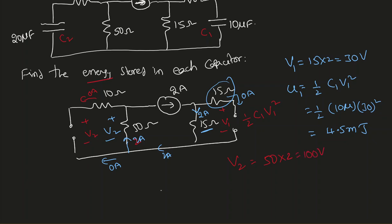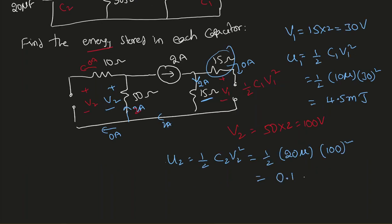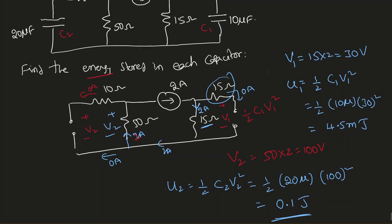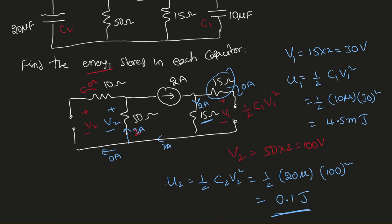The energy stored in capacitor 2: U2 = half C2 V2 squared = half times 20 micro times 100 squared, which gives 0.1 joules. That is the energy stored in each capacitor. I'll stop this video here. In the next video, I'll start talking about the inductor. Thank you.